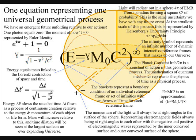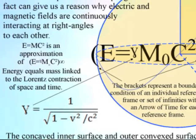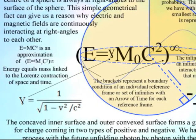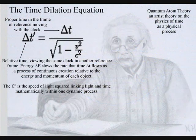This theory can be represented mathematically by just one equation with energy equals mass linked to the Lorentz contraction of space and time. The Lorentz contraction represents the time dilation of Einstein's theory of relativity.